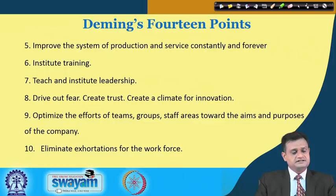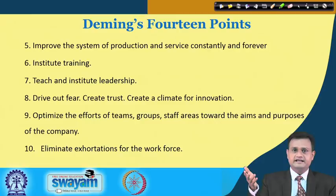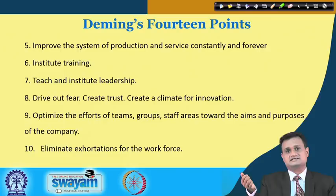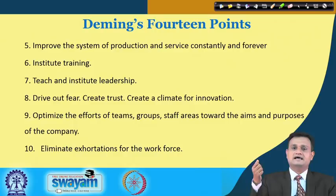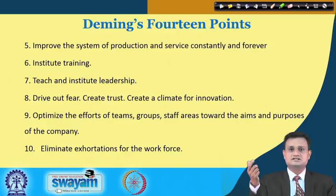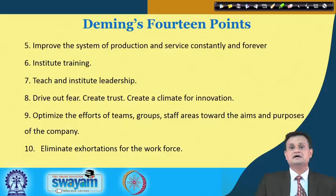Point five: improve the system of production and service constantly and forever — a continuous improvement directive. Point six: institute training and build competency. Point seven: teach and institute leadership. Deming says let leadership be realized at all points in the organization, let people take command and take the leadership of quality, percolating from top to bottom — this is where the culture of leadership is created.